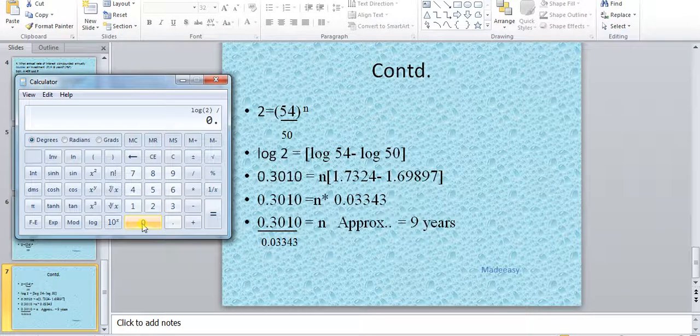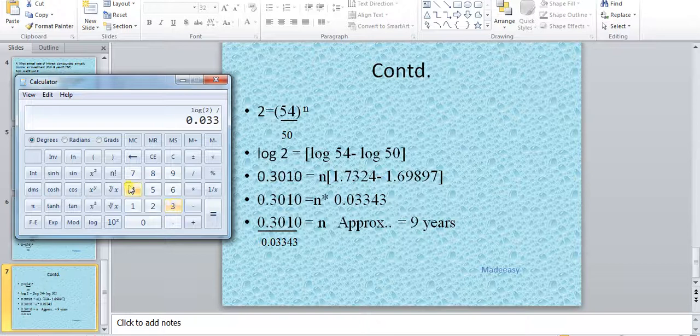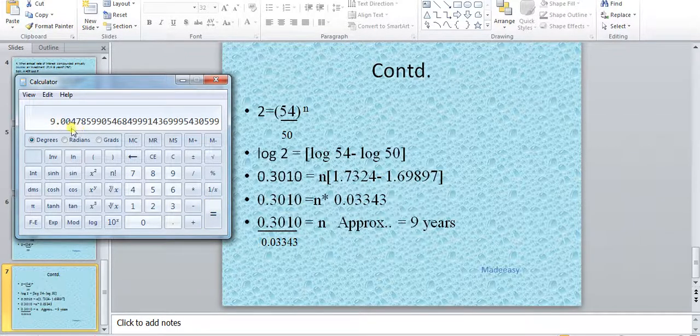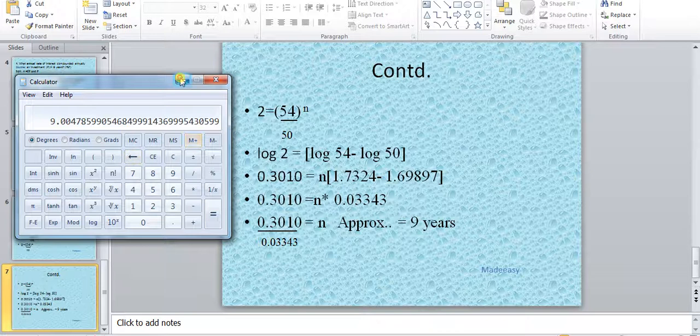When we solve, we write this value: 0.03343. What we get is 9.004, so it is nearly 9 years.